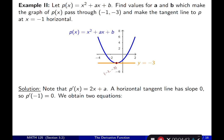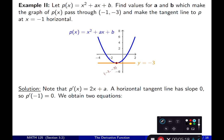First, take the derivative of p(x) with respect to x. x² becomes 2x, and ax is a constant times the derivative of x, which is 1. For p to have a horizontal tangent line at x = −1, the slope must be 0, meaning p'(−1) = 0.